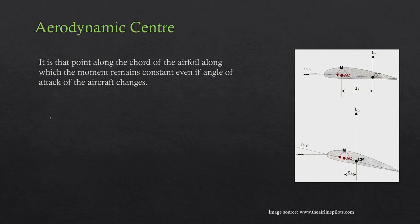Now coming to the aerodynamic center. Consider an airfoil at zero angle of attack — the resultant force R acts at the center of pressure. Consider a point A along the leading edge; the moment at this point A would be R × XA, where XA is the distance between the center of pressure and the leading edge. Now if the angle of attack is increased to say five degrees, the resultant force changes to R' and the distance changes to XA'. The new moment will be R' × XA'. As the angle of attack changes, the moment changes because both the magnitude of R and the distance XA are changing.